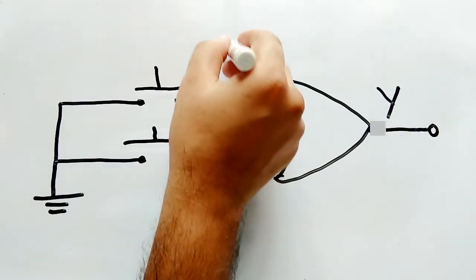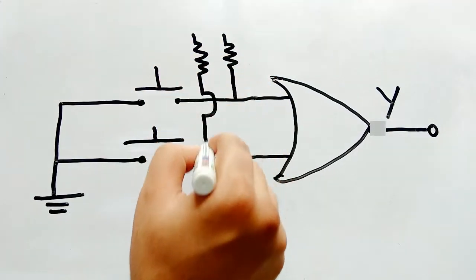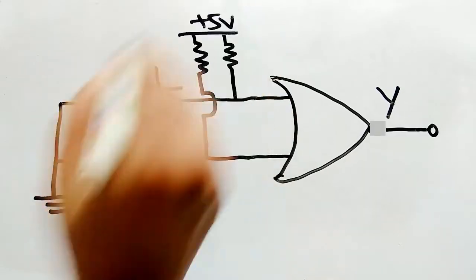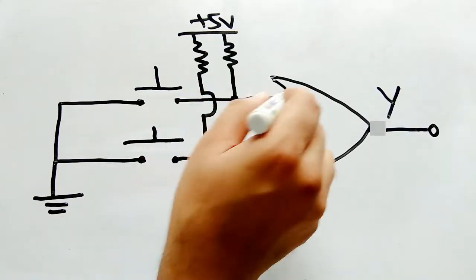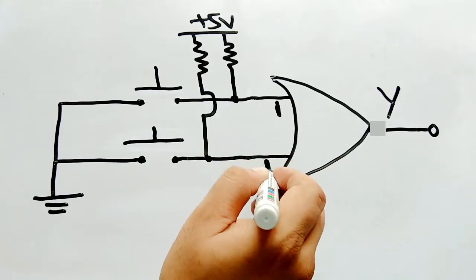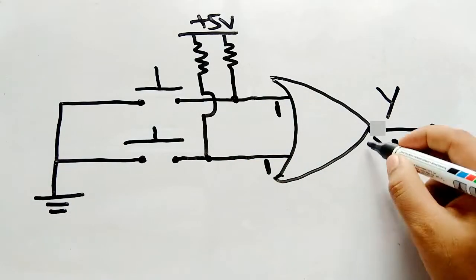Now let's add a pull-up resistor to this setup. The resistor will pull the input pins close to plus 5 volts. This results in logic 1 in the inputs, which in turn gives logic 1 in the output as well.